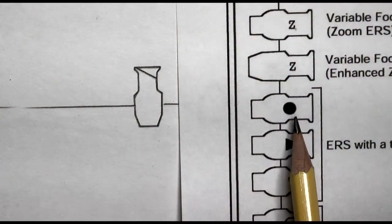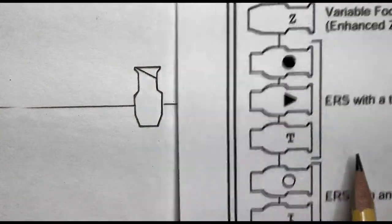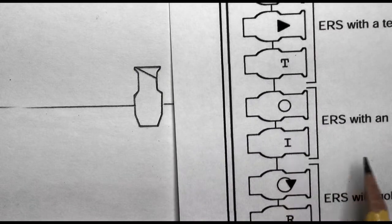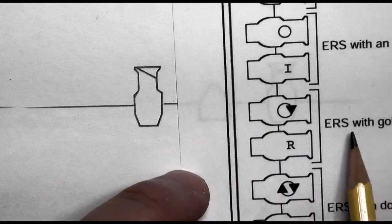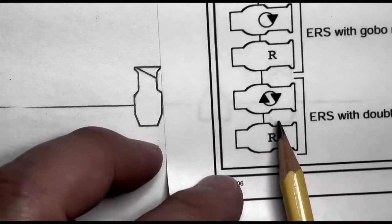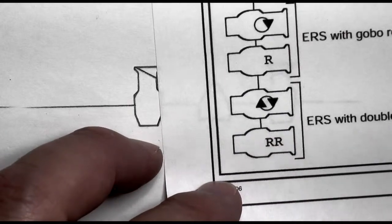You can use the triangle, you can use the dot, or simply the letter T. Irises are either a circle or the letter I. And here is a rotator, that symbol or an R, and here's a double rotator with a symbol or a double R.